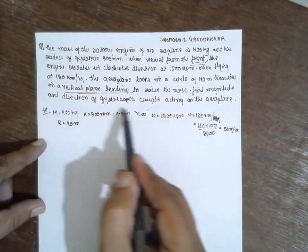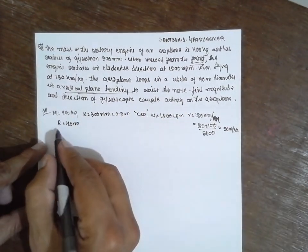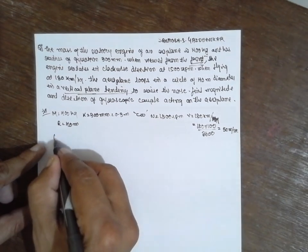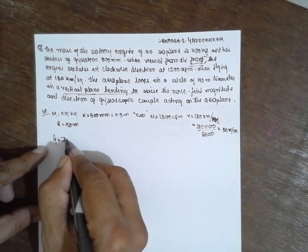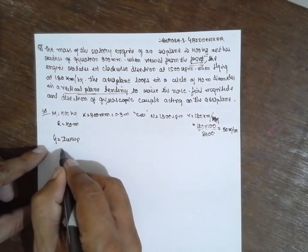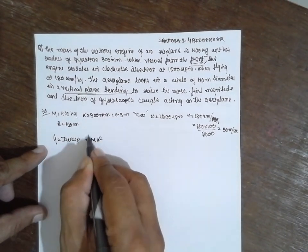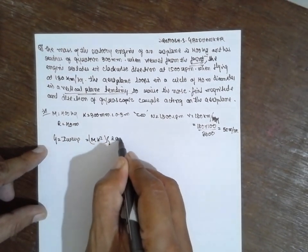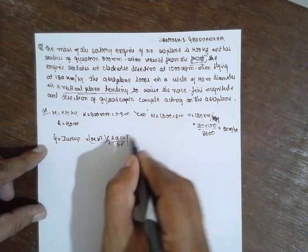Find the migrating direction of the gyroscopic effect. First you have to find out the gyroscopic. Gyroscope G is equal to I omega omega p, where m k square 2 pi n divided by 60 into v by r.